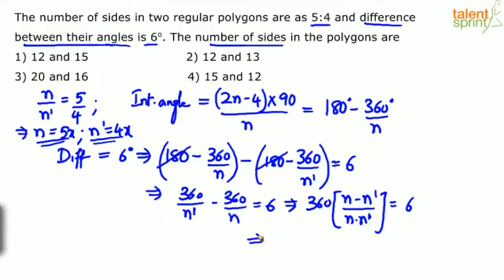We get 360(5x - 4x)/(5x × 4x) = 6, which simplifies to 360x/(20x²) = 6. The x in numerator and denominator cancel, giving us 360/(20x) = 6.